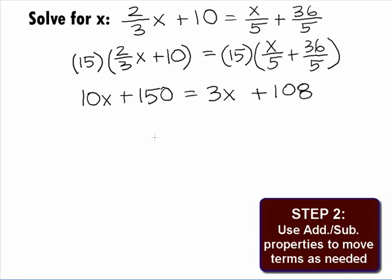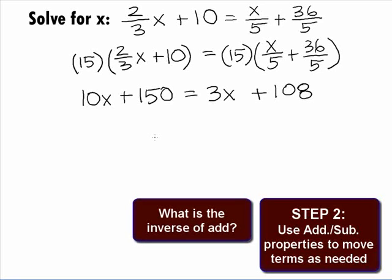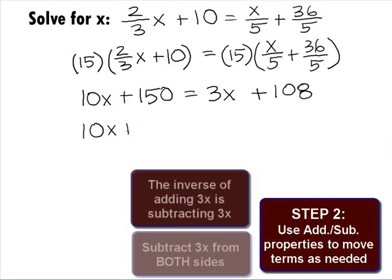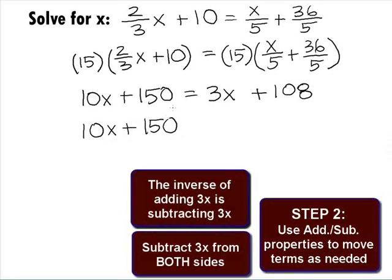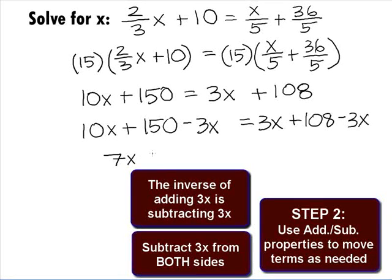In Step 2, we want to use the addition and subtraction properties of equality to move the variable term on one side and all other terms to the other side. Let's go ahead and move the 3x that is on the right side over, so that we have our x term on the left side. What is the inverse of add? Subtract. So we need to subtract 3x from both sides. We'll have 10x plus 150 minus 3x on the left side equals 3x plus 108 minus 3x on the right side. When we take the 10x minus 3x, we get 7x plus 150 on the left side. On the right side, the 3x cancel and we're left with 108.